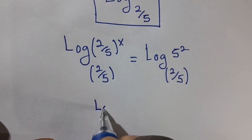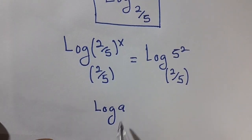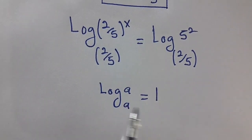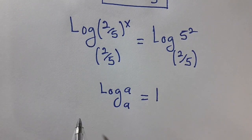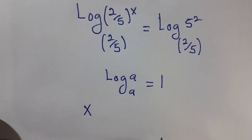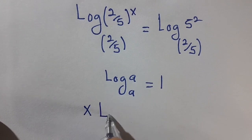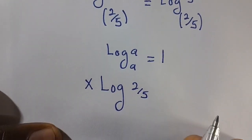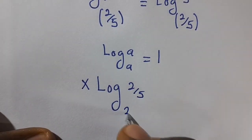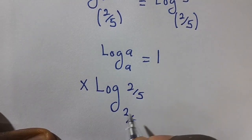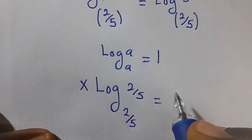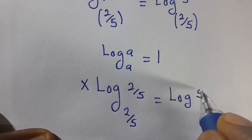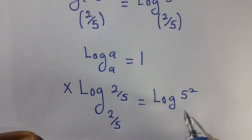We use the identity log base a of a equals 1. So on the left-hand side, using the power rule to bring down the exponent, we have x multiplied by log base (2/5) of (2/5), which equals 1, times x. This equals log base (2/5) of 5 raised to the power 2.